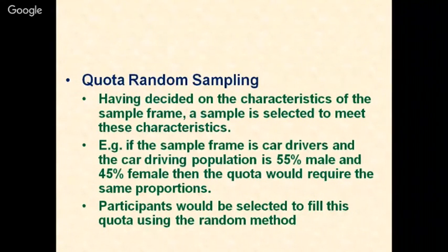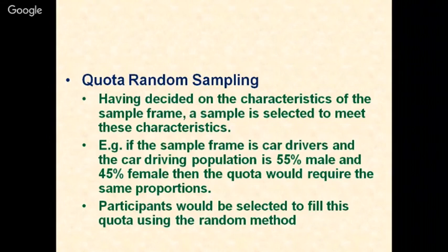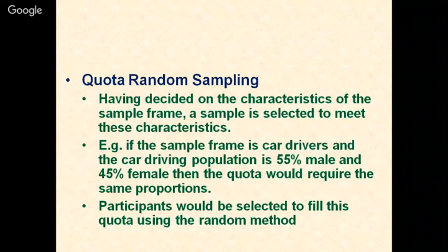Quota random sampling can be biased or unbiased. In unbiased quota sampling, first decide on the characteristics of the sample frame and identify them. For example, if the sample frame is car drivers and the driving population is 55% male and 45% female, then the quota would require the same proportions. Participants are then selected to fill this quota using the random method. If randomization is not done, it falls under biased non-probability sampling.